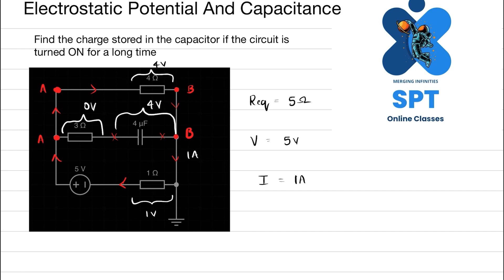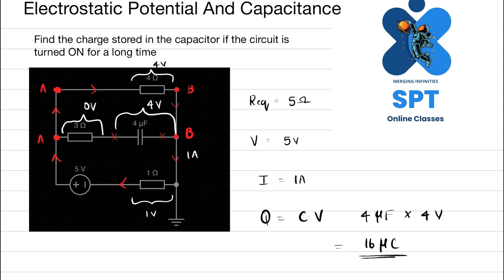The full 4 volts will be across the plates of the capacitor. Once we have the potential difference across the capacitor, we use Q = CV. The capacitance is 4 microfarads and the voltage is 4 volts, so the answer is 16 microcoulombs — that is the charge stored in the 4 microfarad capacitor.